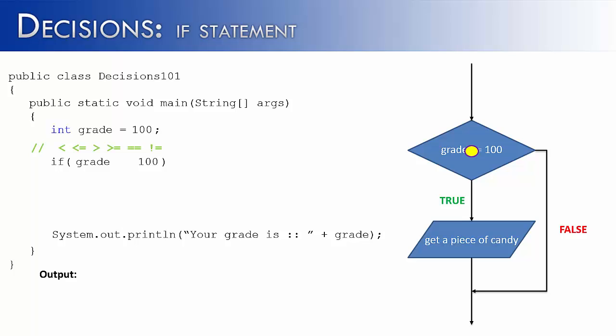I can say grade is less than, less than or equal to, greater than, greater than or equal to, equal to, or not equal to 100. In this case, I want to say if someone made 100 on the exam, they're going to get a piece of candy. So I would use the double equal sign.